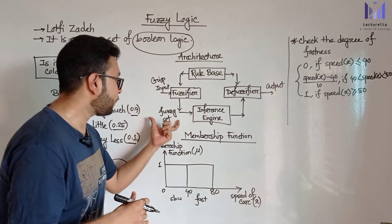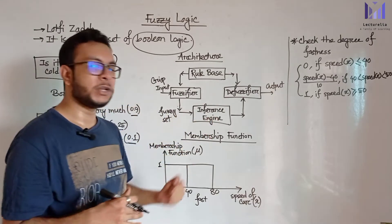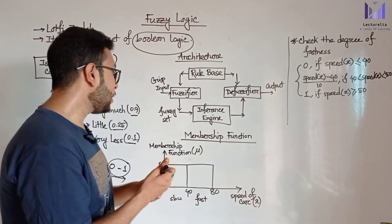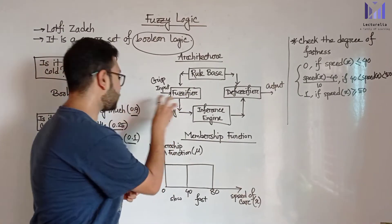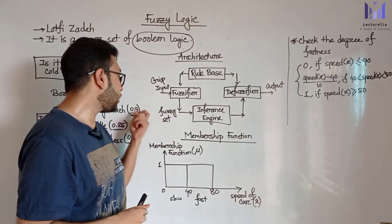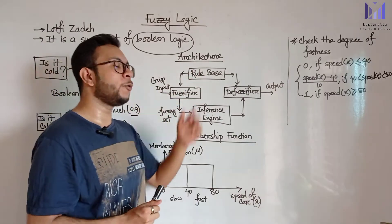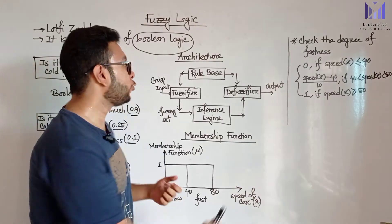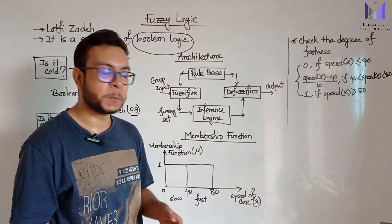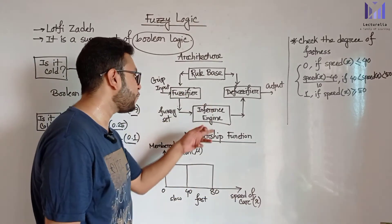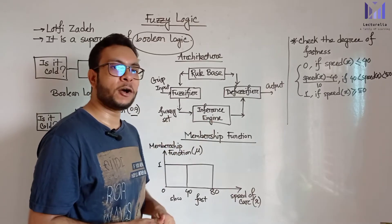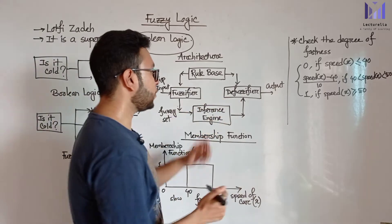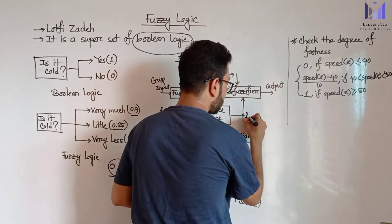After fuzzification, the fuzzy set goes into the inference engine. The inference engine performs reasoning - it receives the fuzzy set with the degree of something. Based on that degree value, the if-then rules fire and the corresponding values are determined. The inference engine, like in an expert system, decides which rule fires.